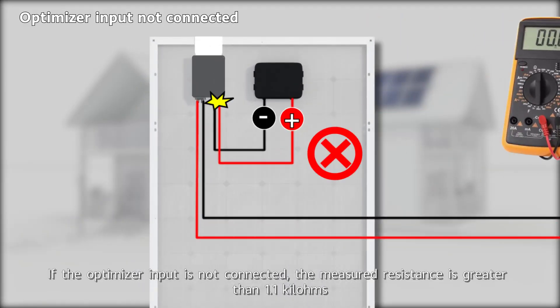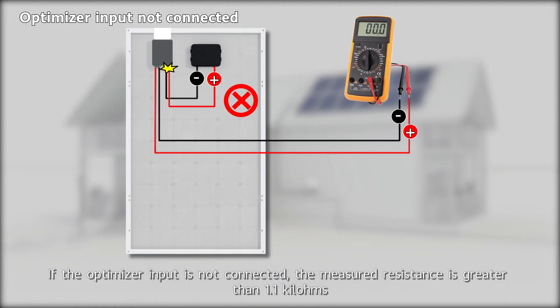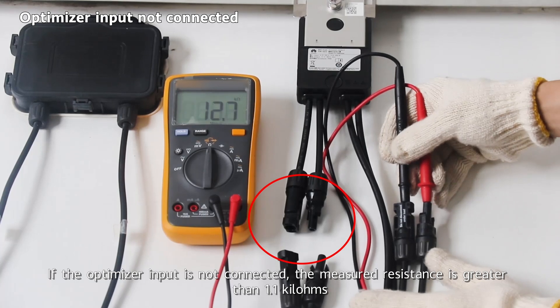If the optimizer input is not connected, the measured resistance is greater than 1.1 kilohms.